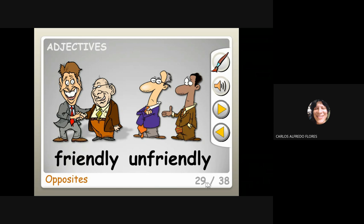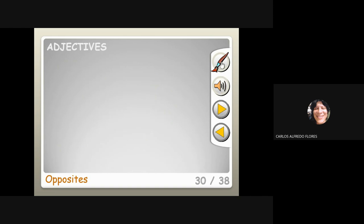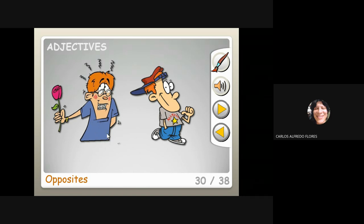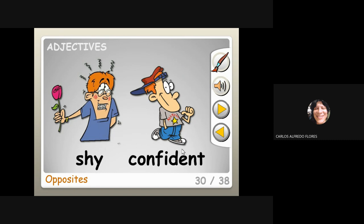Friendly — don't be unfriendly. If someone offers you friendship, be nice, be kind, and be friendly. Only stay away from toxic people and fake friends. And this one — he's shy; he wants to give the flower to someone but he's shy. Shy and confident.